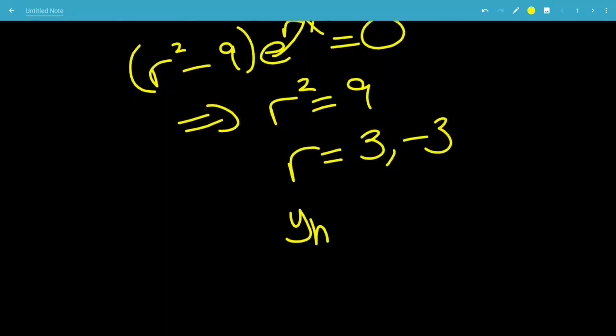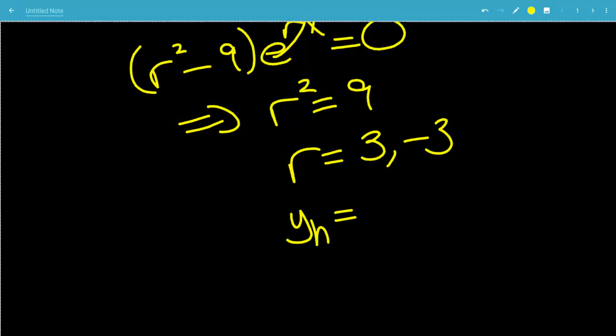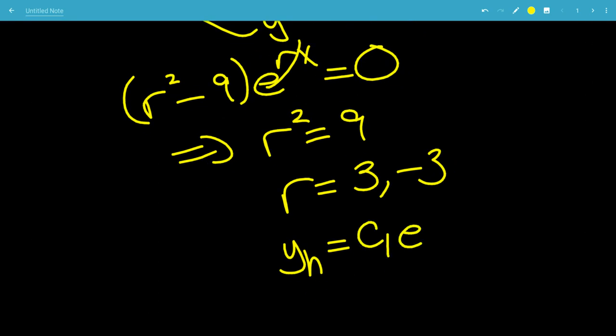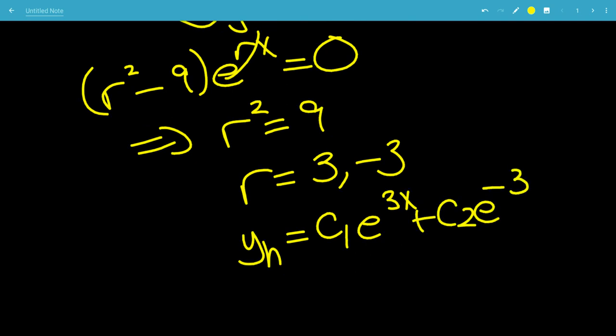So this means yh, or the homogeneous solution, will be c1 e to the first r, which is 3x, plus c2 e to the second r, which is negative 3x.